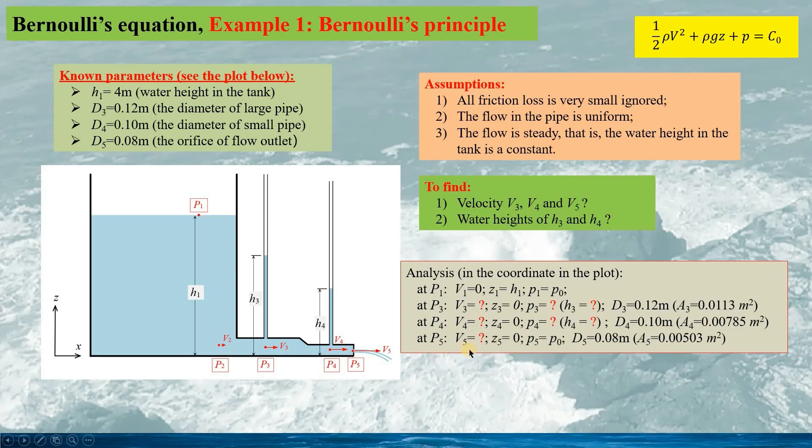At P5, V5 is unknown, Z5 is 0, and P5 is P0, the atmospheric pressure, because P5 is exposed to the atmospheric pressure. The diameter of the orifice is 0.08m, the section area given by A5.